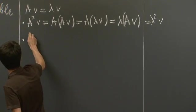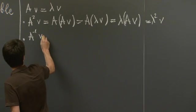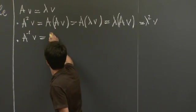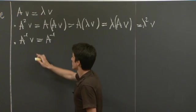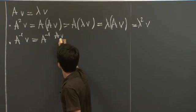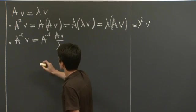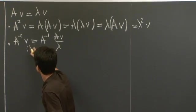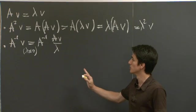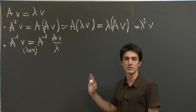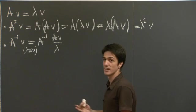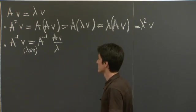Similarly, if we hit V with A inverse, in this case we can write V as A V over lambda, given that, of course, lambda is non-zero. But the eigenvalues of an invertible matrix are always non-zero, which is an exercise you should do yourself.